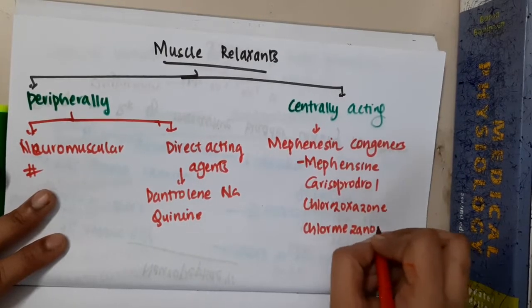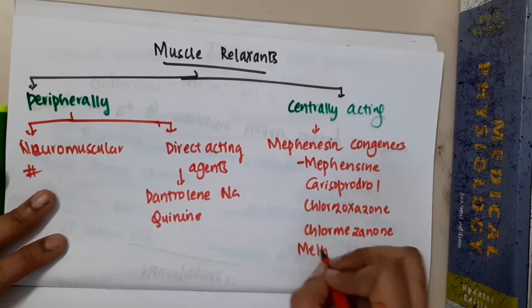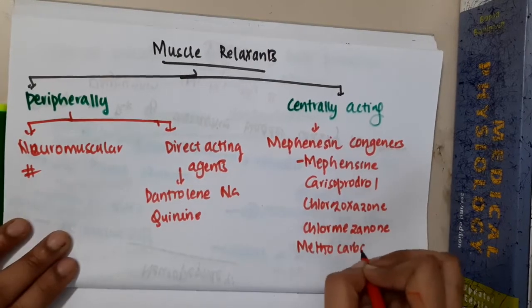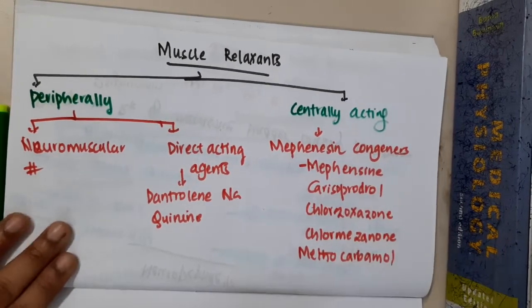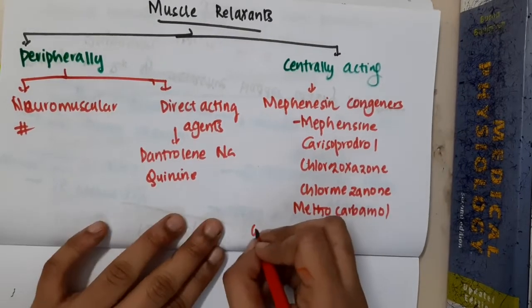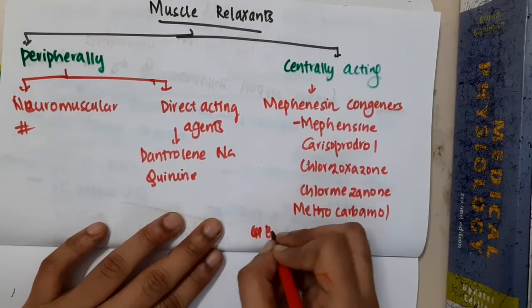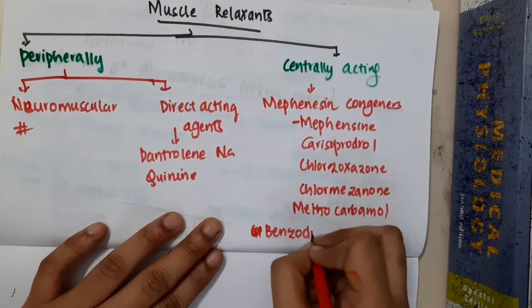The methenesin congeners include methenesin, carisoprodol, and methocarbamol. Then we have GABA benzodiazepines. Benzodiazepines are also centrally acting muscle relaxants.